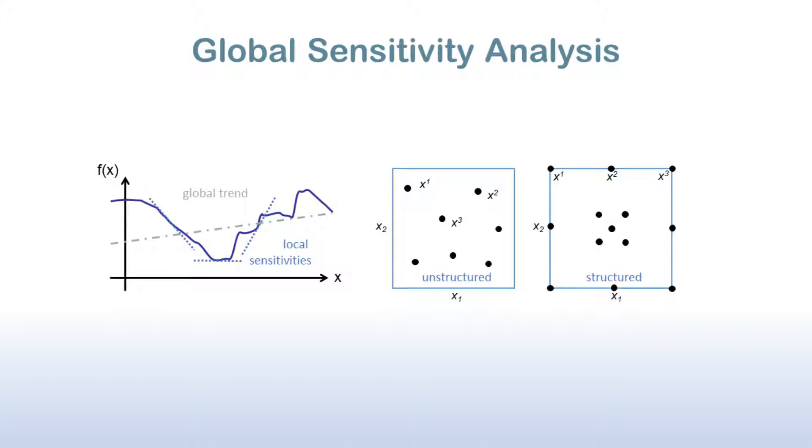The Dakota methods for global sensitivity analysis typically rely on a well-spaced set of model response evaluations over the input parameter space, as shown in these images. Of Dakota's many methods that generate well-spaced samples, Latin hypercube sampling is the most commonly used, but we will briefly survey some of the other sensitivity analysis methods at your disposal at the end of this video.